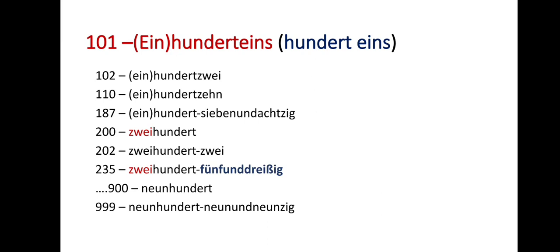100 is 'ein hundert', or you can simply say 'hundert'. 101 is 'hundert eins', 102 is 'hundert zwei', and so on. For 187, it would be 'hundert siebenundachtzig'. For a single hundred, you can simply say 'hundert'.